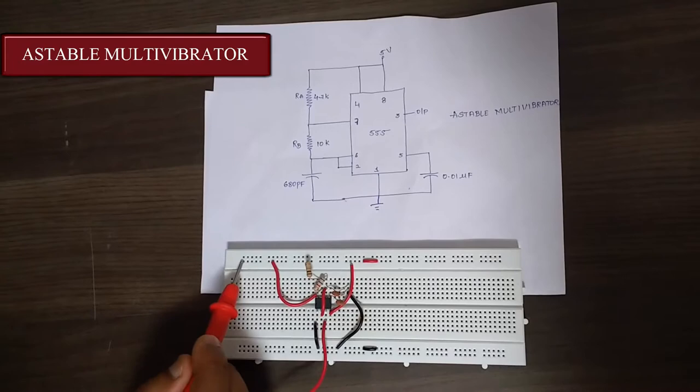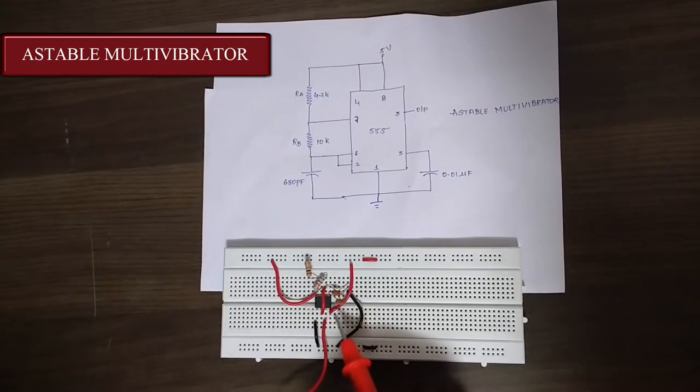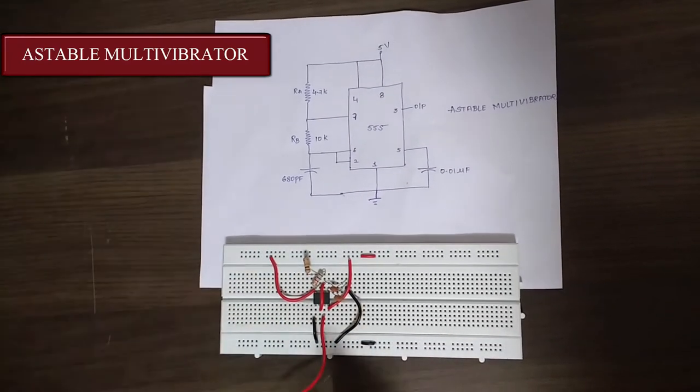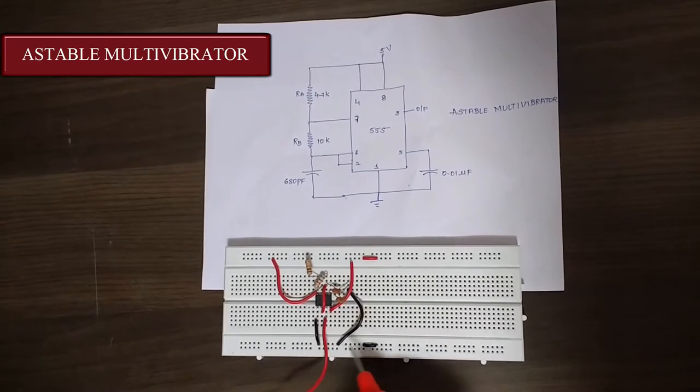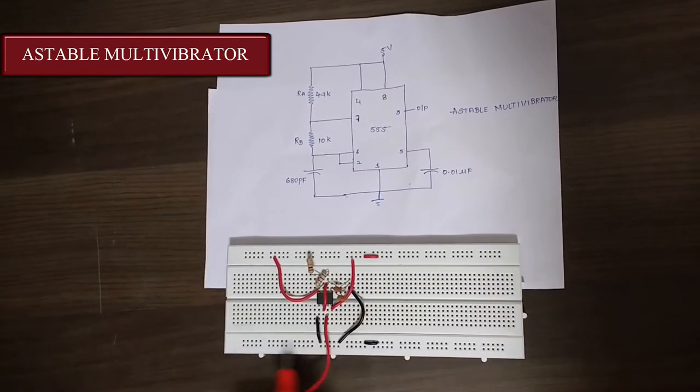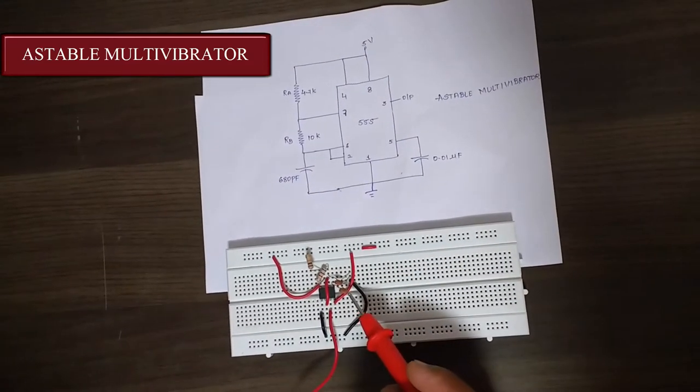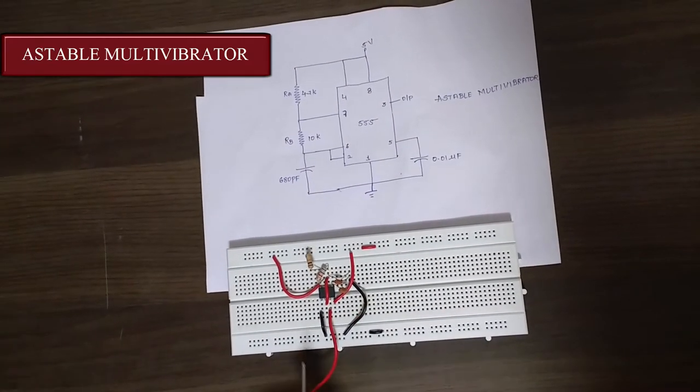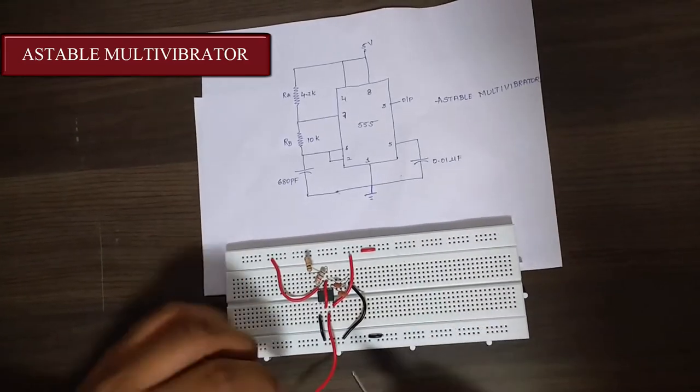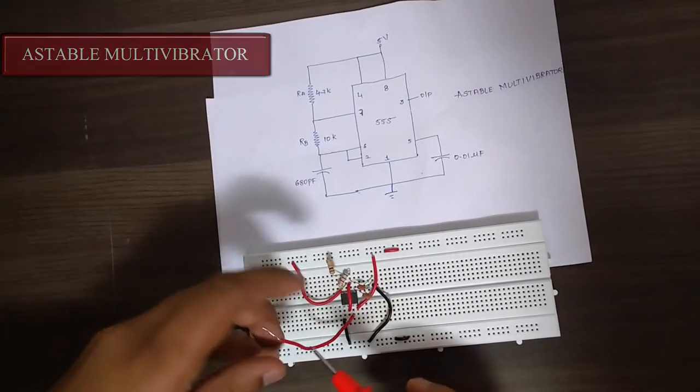This line is given 5 volts, which is directly given to pin 4, and pin 1 is grounded. This line also provides ground. This is the 680 picofarad capacitor and this is 0.01 microfarad capacitor. The output is found over here, which is pin 3.